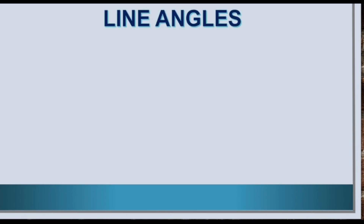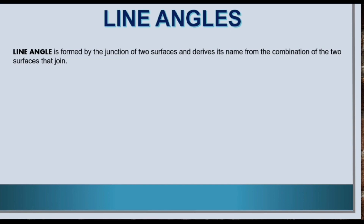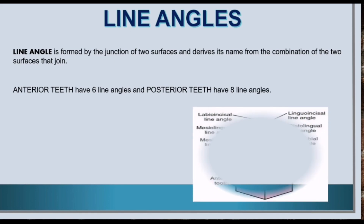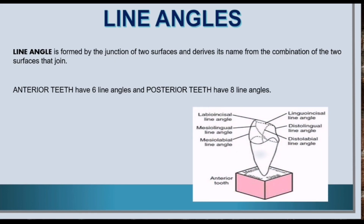Now let us know about line angles. A line angle is formed by the junction of two surfaces and derives its name from the combination of the two surfaces that join. Anterior teeth have six line angles and posterior teeth have eight line angles. The line angles of anterior teeth are as follows.